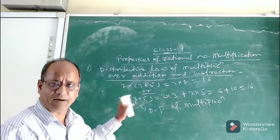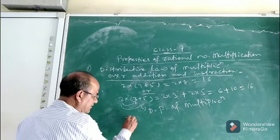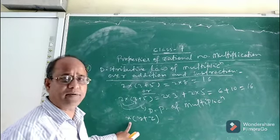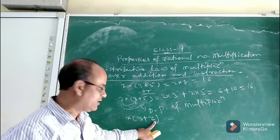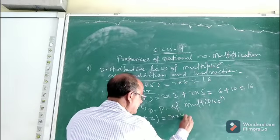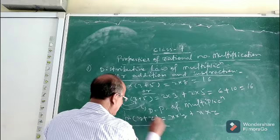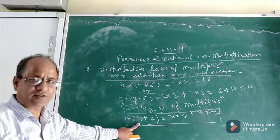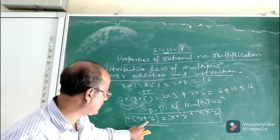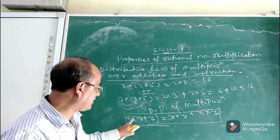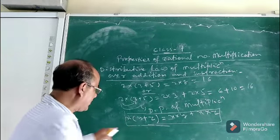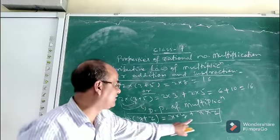Instead of taking numbers, we can take symbols. Suppose x, y, and z are rational numbers. Then x into (y plus z) equals x into y plus x into z, where x, y, and z are your rational numbers. This formula is the distributive property of multiplication over addition. x is multiplied over the addition of y and z, and x gets distributed, so we write x into y plus x into z.